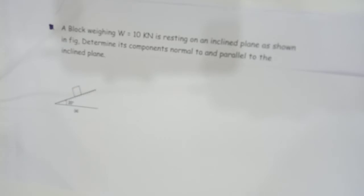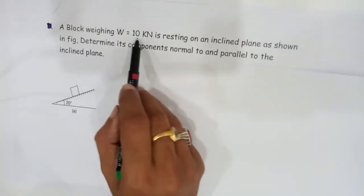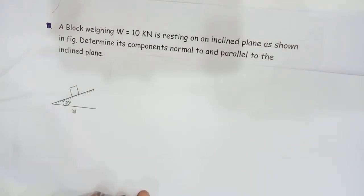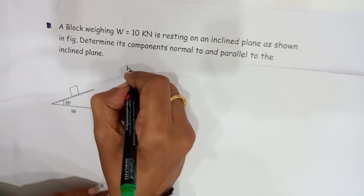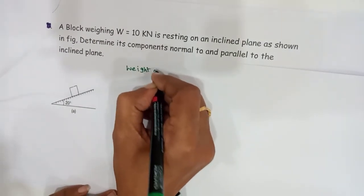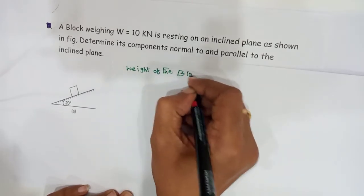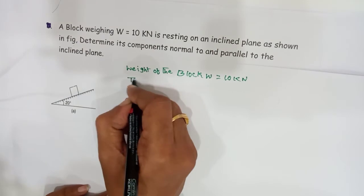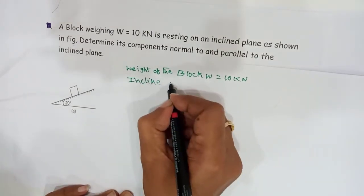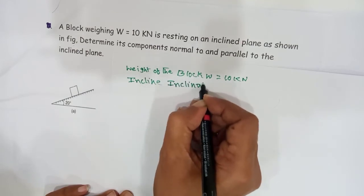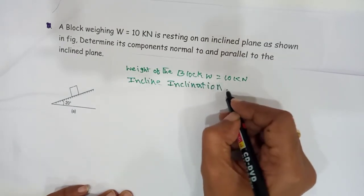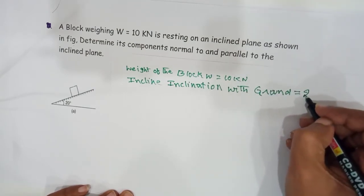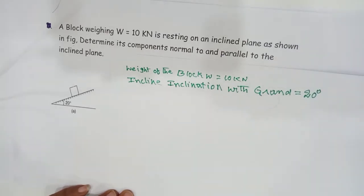Now we will solve one problem on this. A block of weight W equal to 10 kilonewtons is resting on an inclined plane as shown in the figure. Determine its components normal to and parallel to the incline. Given: W equals 10 kilonewtons, and the inclination with the ground is equal to 20 degrees.